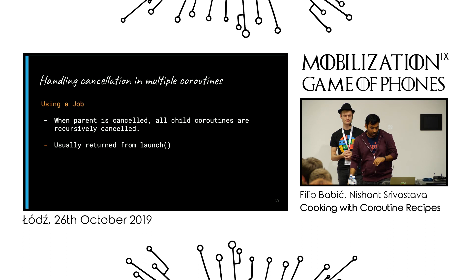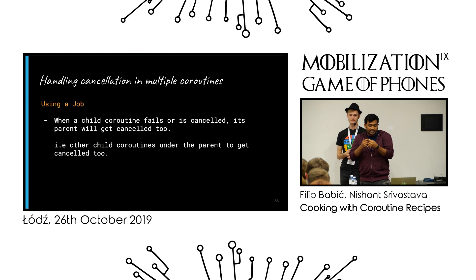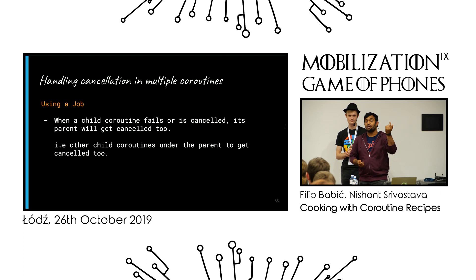The gotcha is that when a child gets cancelled or fails during execution inside a parent, it will also cancel its parent. And when a parent gets cancelled, it cancels its children — so recursively, all children coroutines get cancelled.